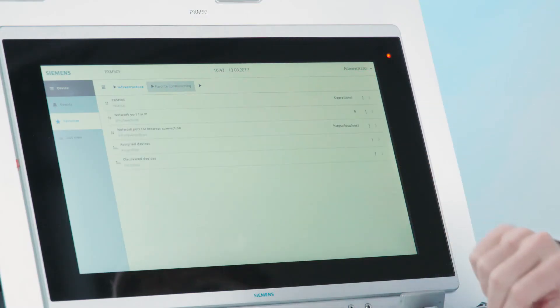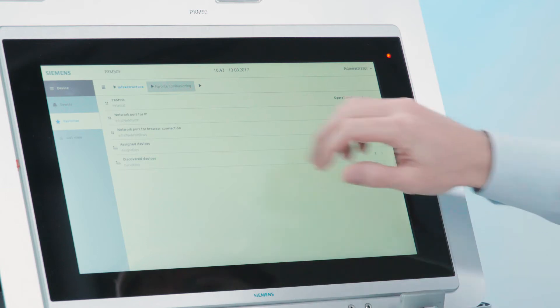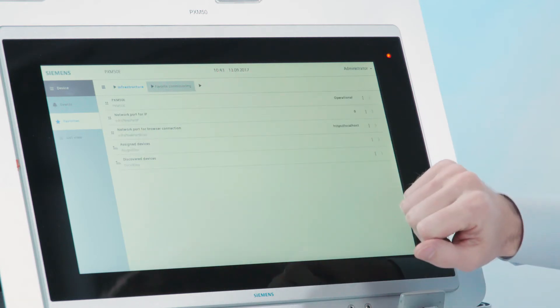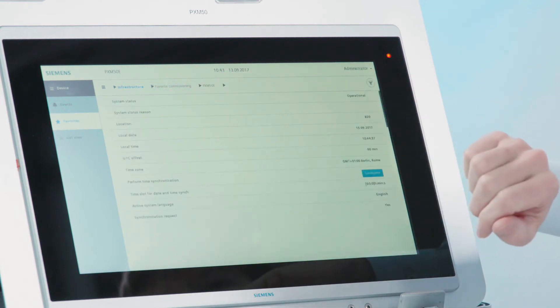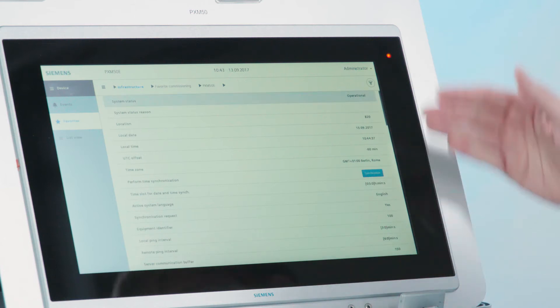Similarly, you can change the language of the device. For this you navigate back to favorite commissioning and you see your PXM50 device object right there, where you can drill down and you see all those local settings such as the language or the time zone.